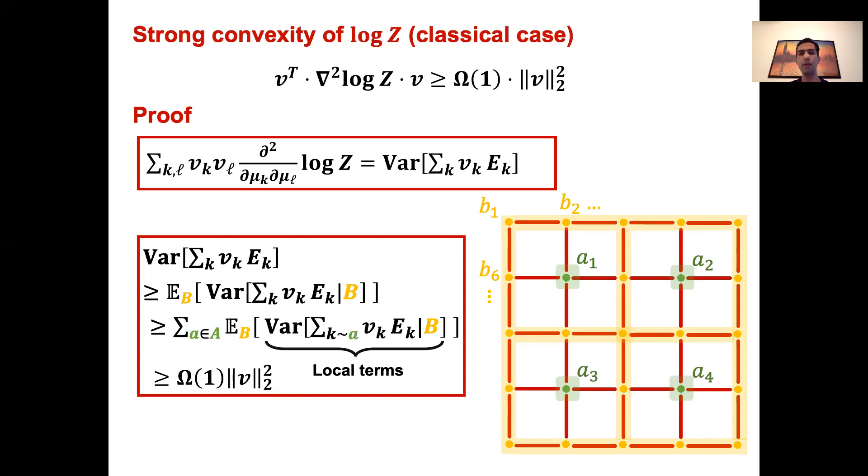So as you see, there are two main steps in this proof. One is to write the Hessian in terms of a nice variance form, and one is to decompose the global variance as a sum of local conditional variances. These steps rely on the operators E_k to commute with each other, and more importantly, in the second step, we basically use the conditional independence, or the Markov property. As I explained earlier, in the quantum case, neither of these facts hold anymore.